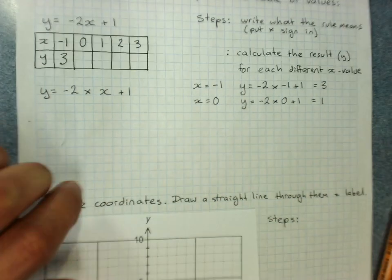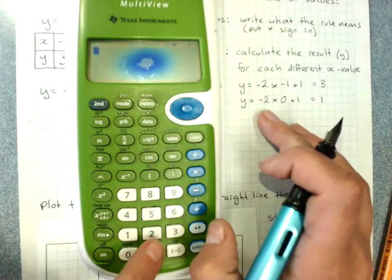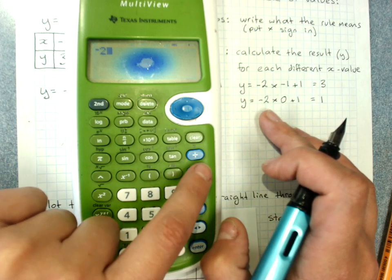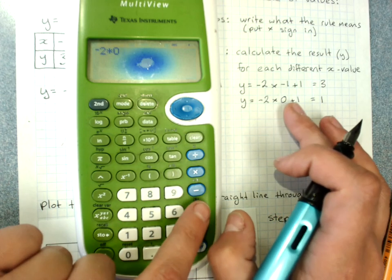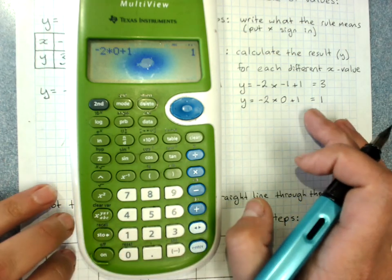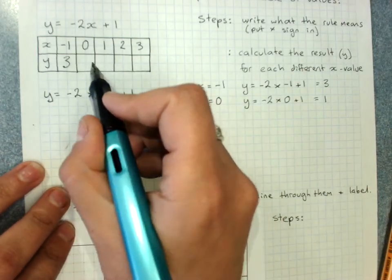But if we're not sure, or if we've got time at the end of the test to check, we check it with our calculator. Negative 2 times 0, plus 1 equals 1. We got it right. So where x is 0, we put 1.